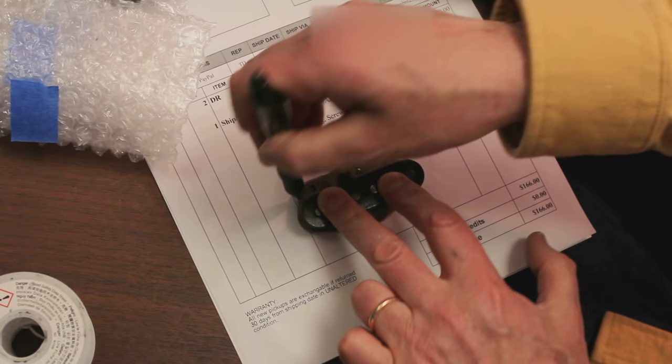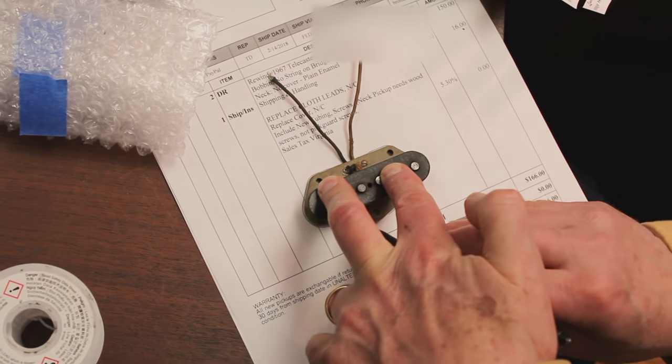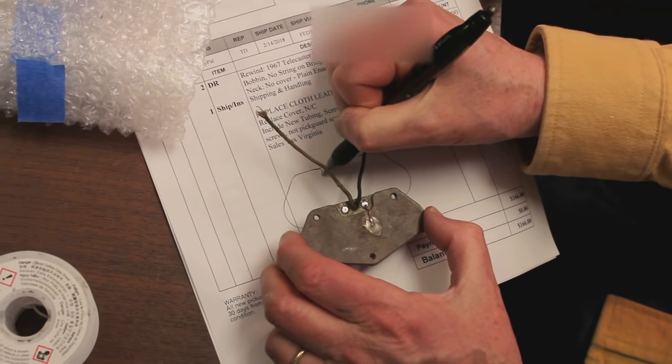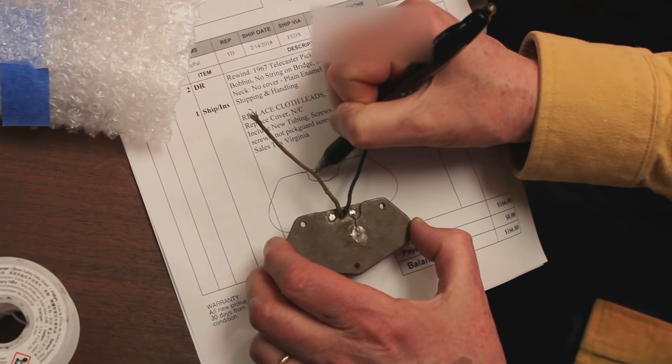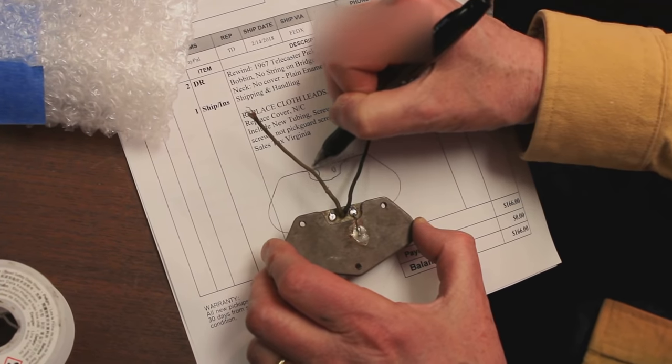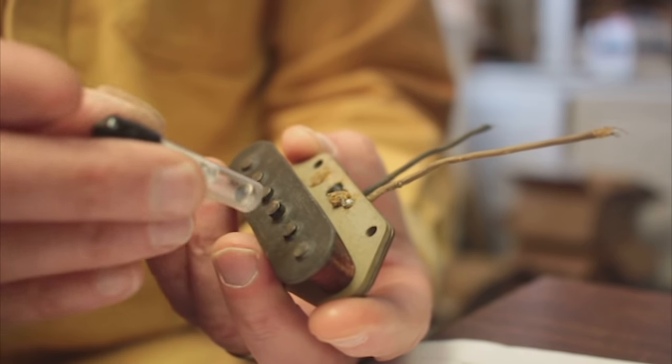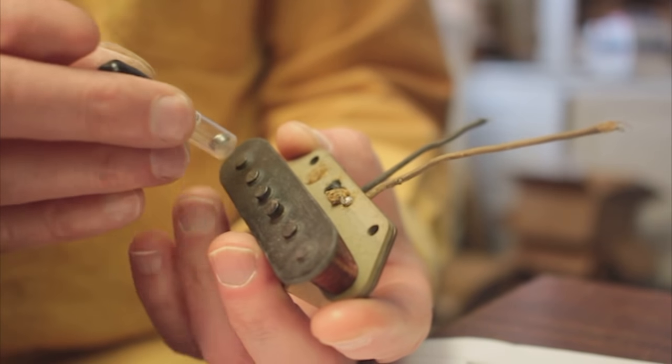So the next step is we make a drawing and determine we get coil direction and magnetic orientation on paper before we take anything apart. This is telling us this magnet is south to strings.